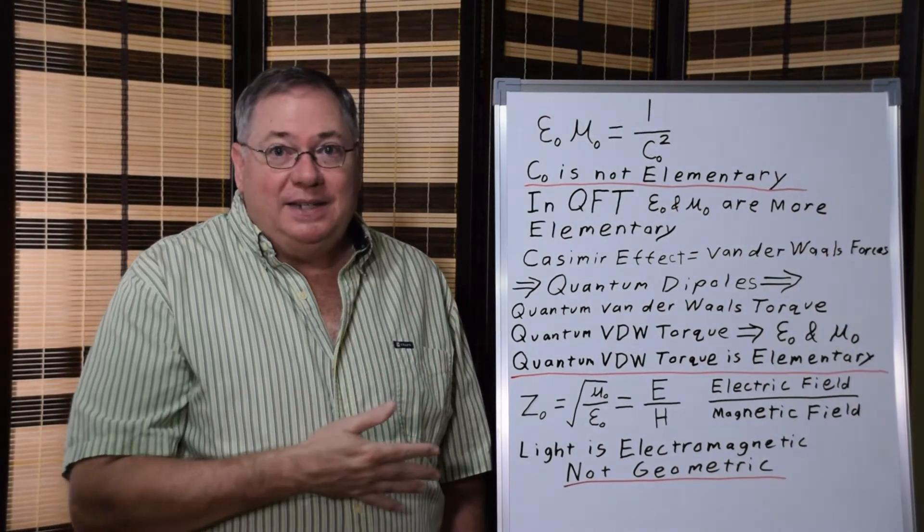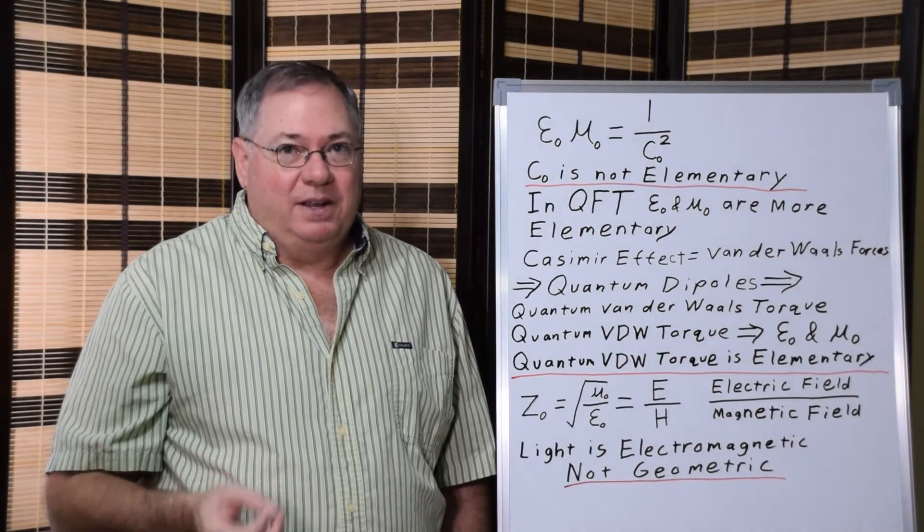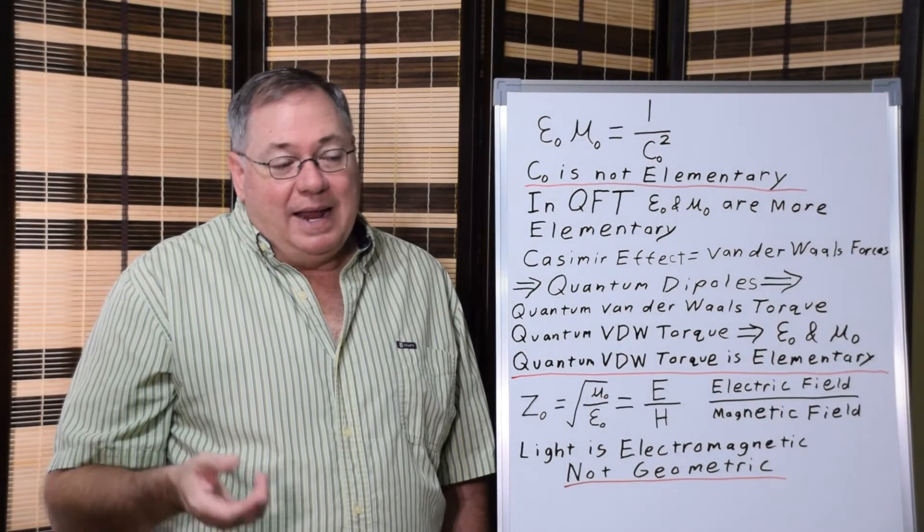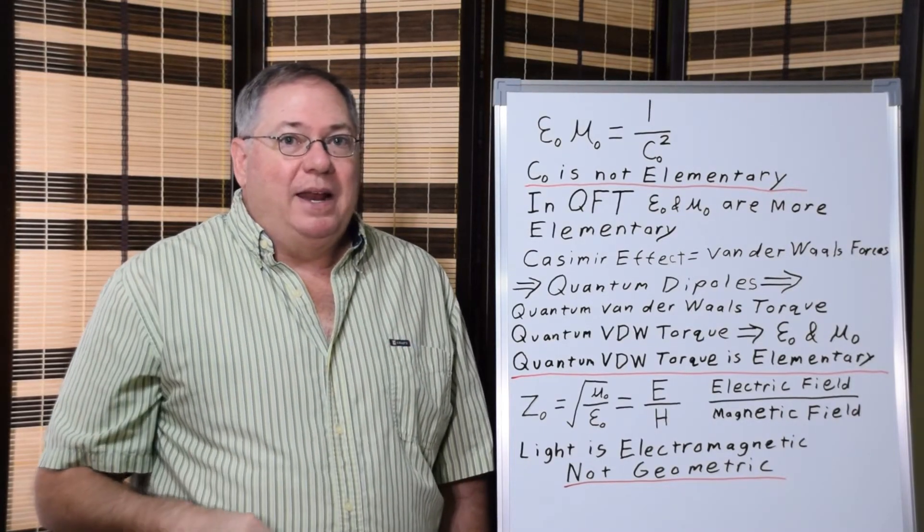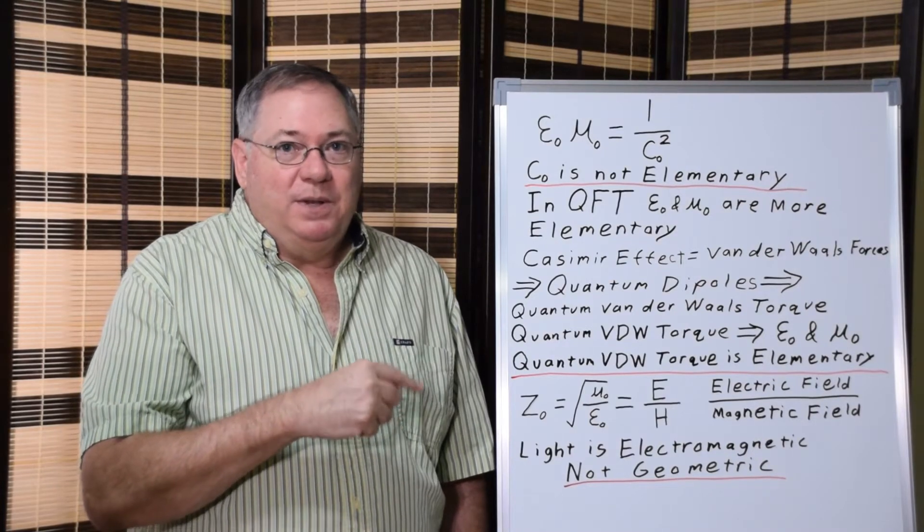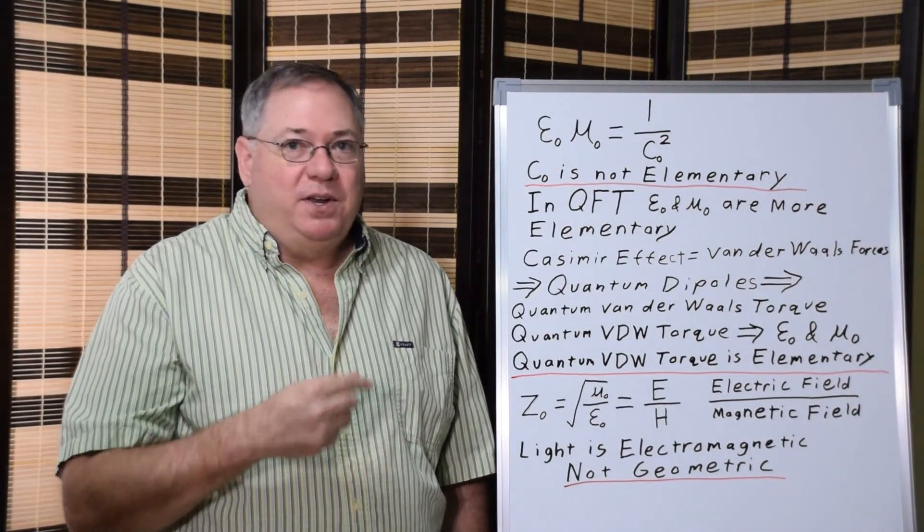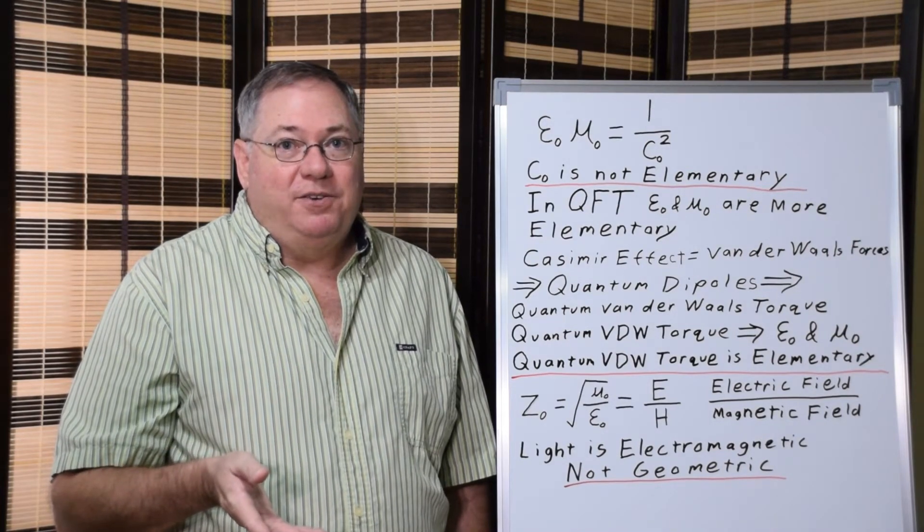So what does that tell us? Speed of light is an electromagnetic effect. It's not a geometric effect. And as I said, you have to go back and look at what the electric and magnetic constants are doing if you're going to understand what's going on with the speed of light whenever you're talking about relativistic effects, whether it be special relativity or general relativity.